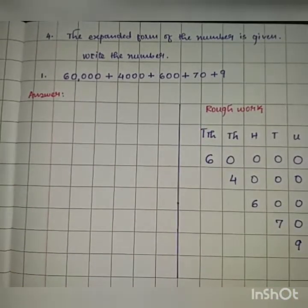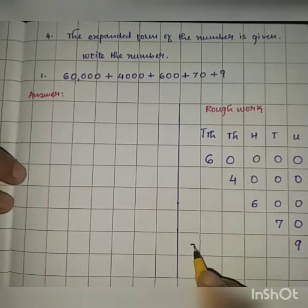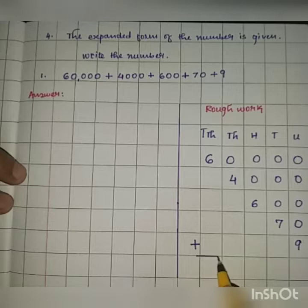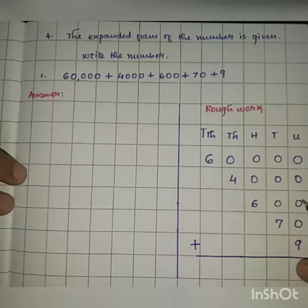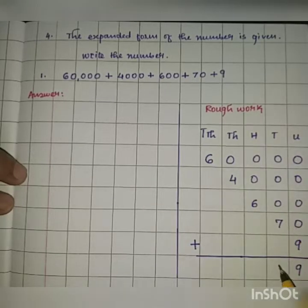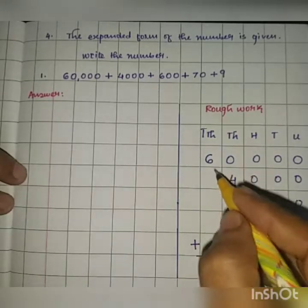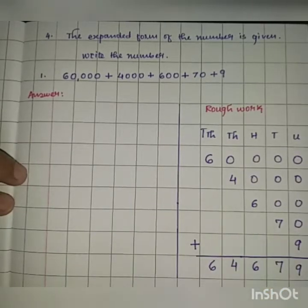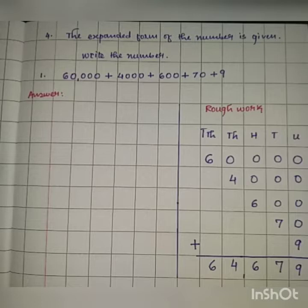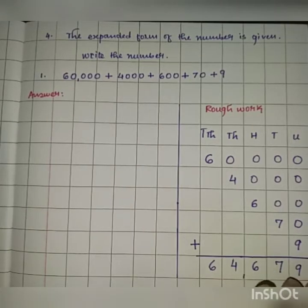This is the expanded form — when we write the place value of every digit and add them up, we get the standard form. Adding all the place values: the units column gives nine, tens gives seven, hundreds gives six, thousands gives four, and ten thousands gives six. So the answer is sixty-four thousand six hundred and seventy-nine — that is the standard form.